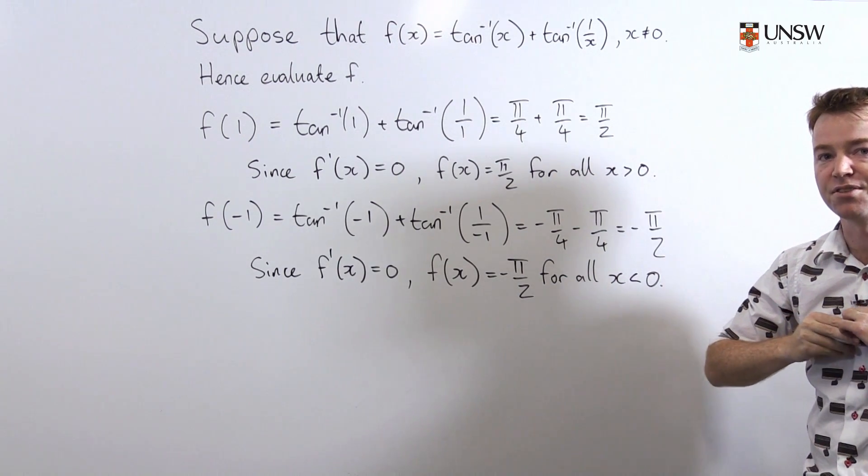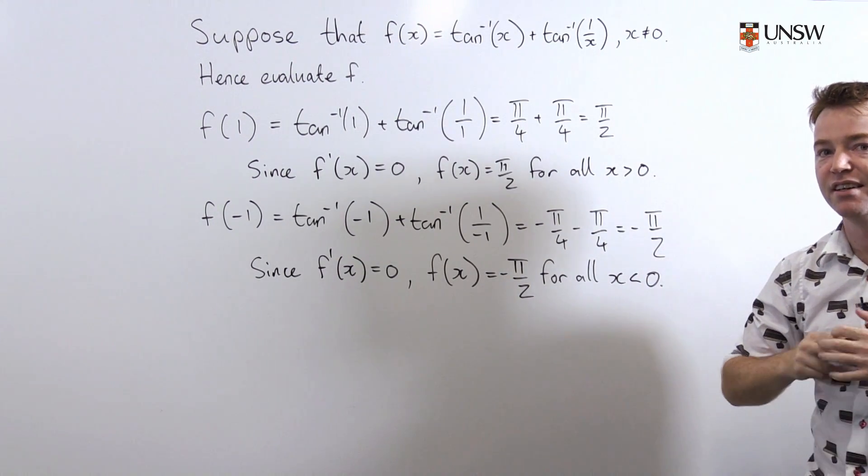So, the function f is constant but it's two different constants on either side of x equals 0.